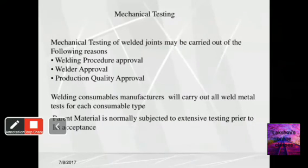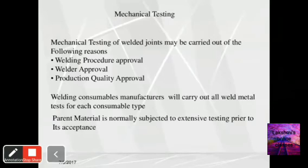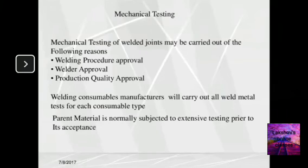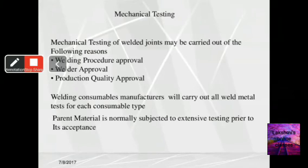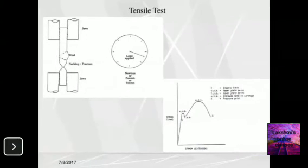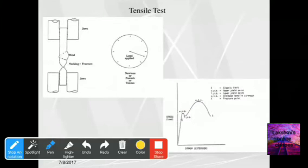Welded joints testing is carried out for welding process approval, weld approval, and production quality. Welding consumables manufacturers carry out all-weld metal tests for each consumable type, and parent material is normally subjected to extensive testing prior to acceptance. Coming to mechanical testing — these are the destructive testings. The tensile test gives a stress-strain diagram for the material.